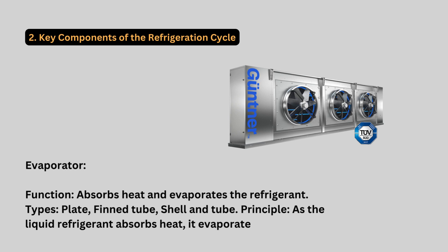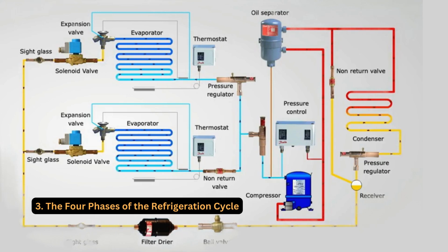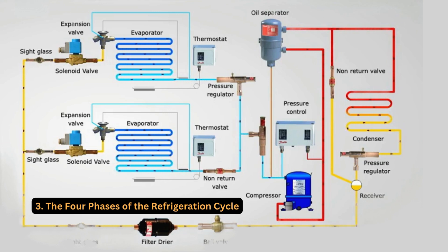Compression: the compressor sucks in low-pressure refrigerant gas, compressing it into a high-pressure, high-temperature gas. This process moves the refrigerant through the system. Condensation: the high-pressure gas travels to the condenser, where heat is removed from the refrigerant, causing it to condense into a high-pressure liquid.